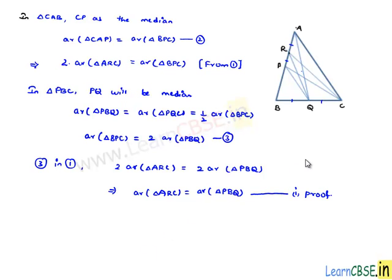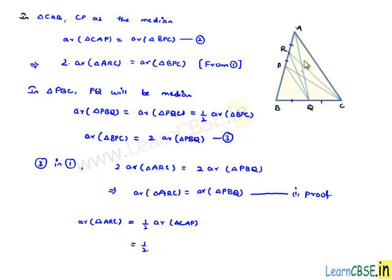Again, consider equation number 1: area of triangle ARC equals half times area of triangle CAP. Now since CP is the median of triangle ABC — it divides AB into two equal halves — it also divides the area into two equal halves. Therefore, area of triangle CAP equals half times area of triangle ABC. So area of triangle ARC equals half times half times area of triangle ABC, which equals one-fourth times area of triangle ABC.